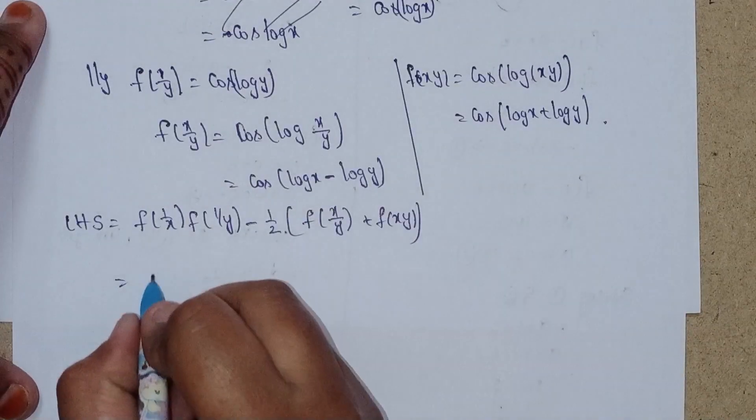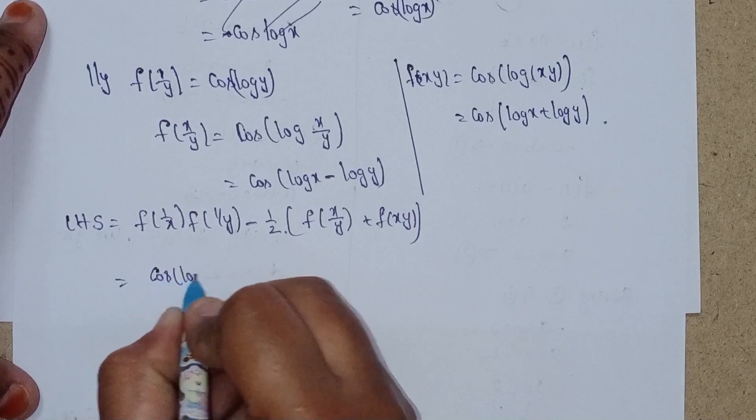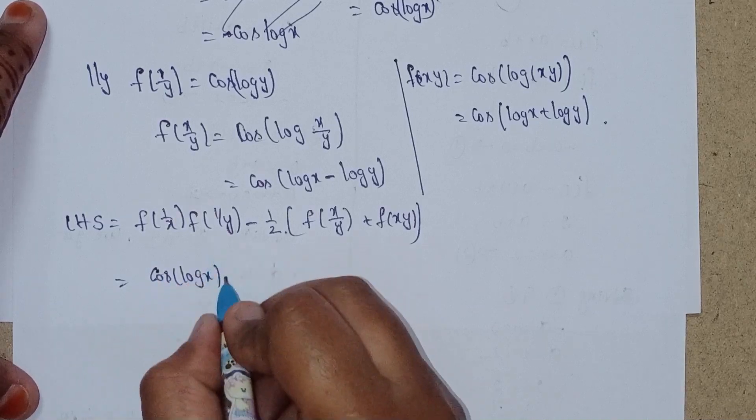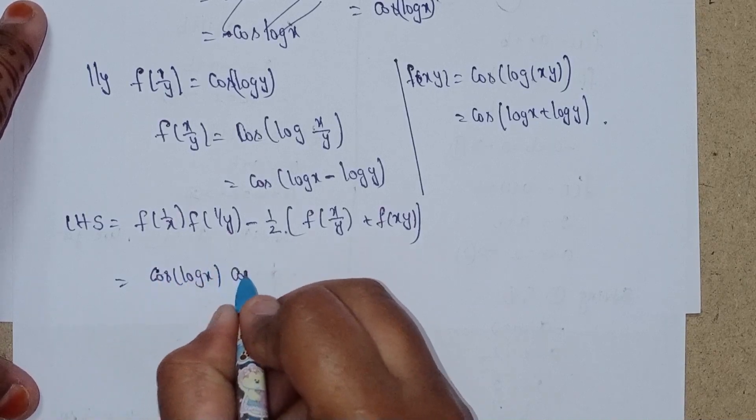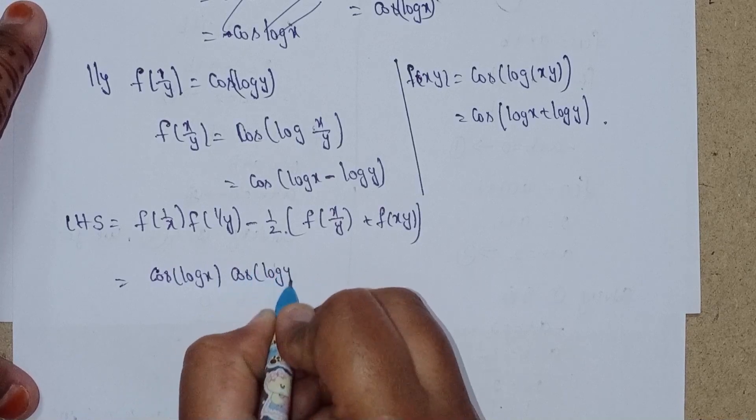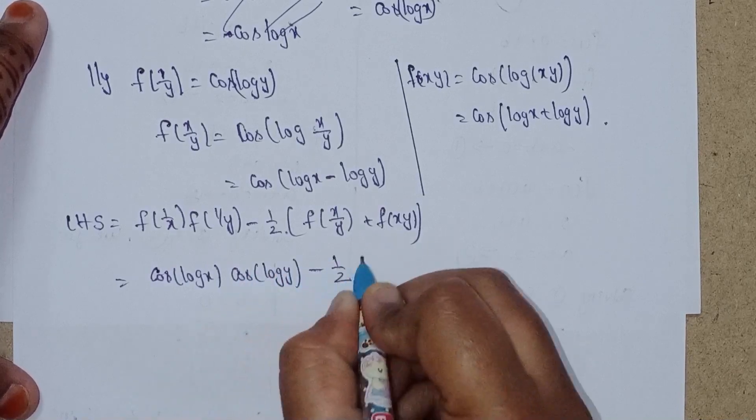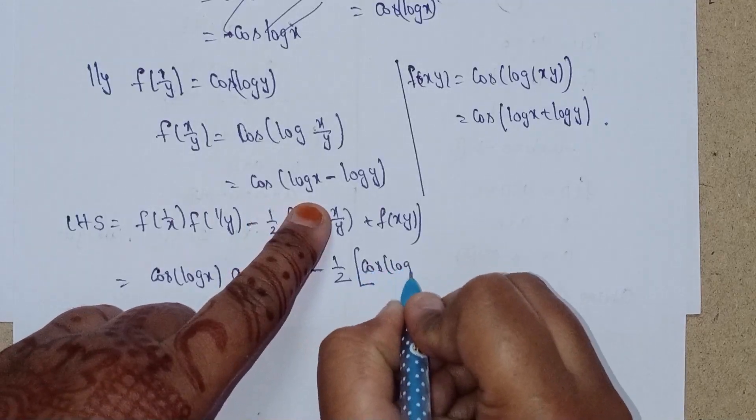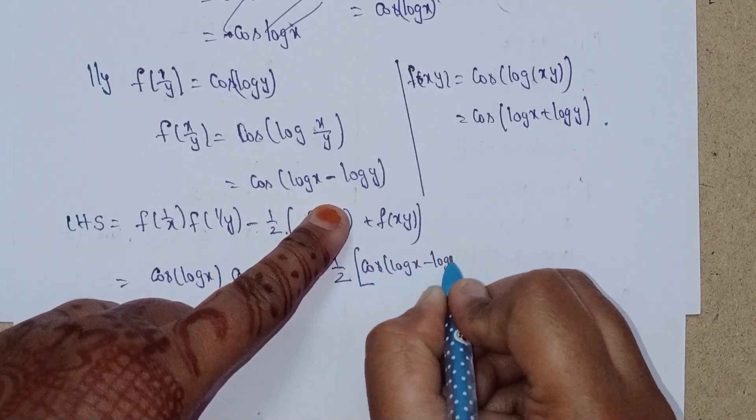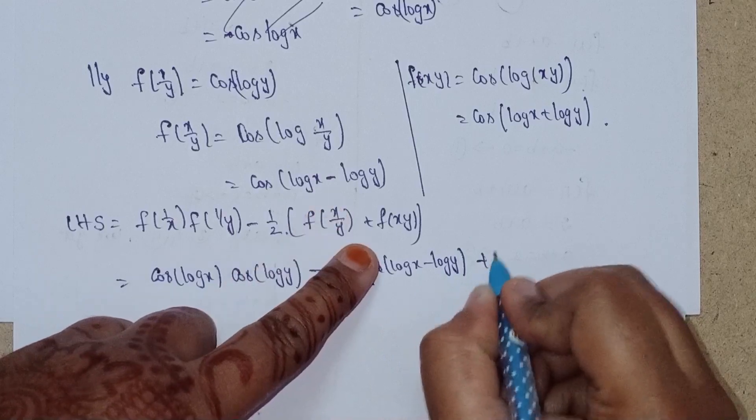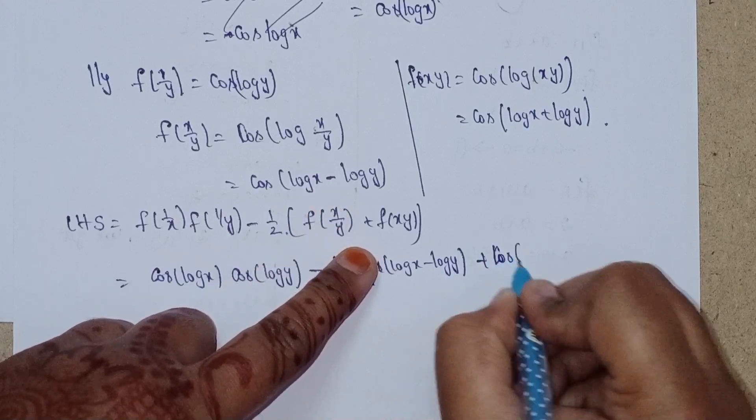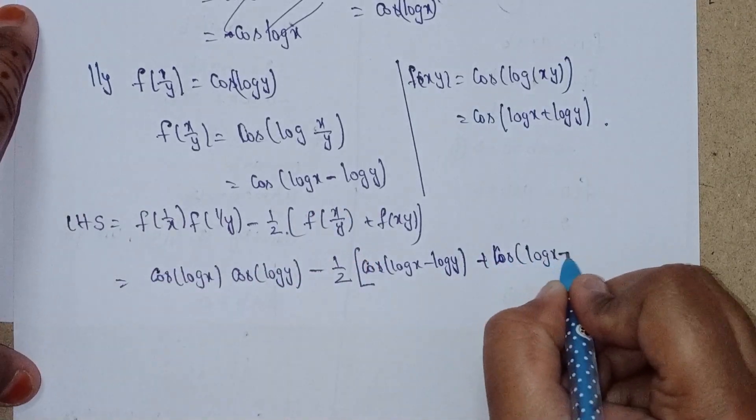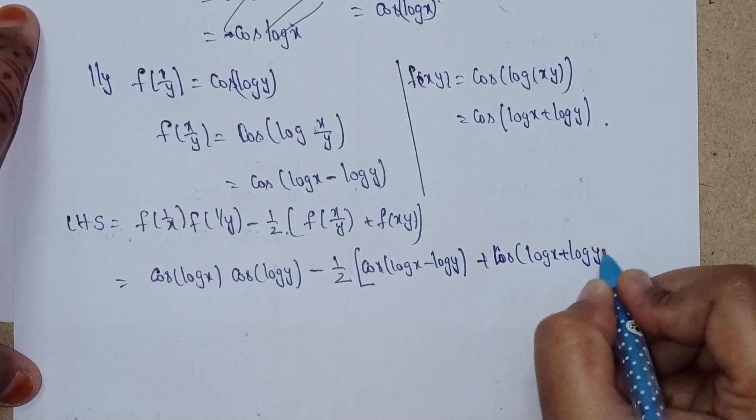Substituting the values: cos(log x) * cos(log y) - 1/2 * [cos(log x - log y) + cos(log x + log y)].